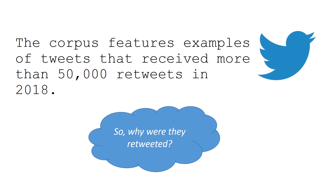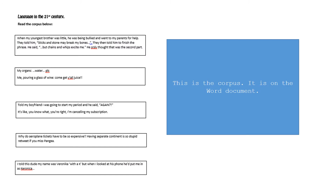We're going to think about why these have been retweeted. In the folder there's a Word document with all the resources, and I've just snipped this bit here to show you that this is the corpus you should be looking at for this activity. So you have one, two, three, four, five tweets, and as I said, these were retweeted the most in 2018. I've typed them exactly as they appeared in the tweet, so the spelling, punctuation, and grammar are as they would have been in the tweets themselves. That's really important because changes and variations in how people type, write, and speak is something we're really going to study in a lot of depth in the coming year.